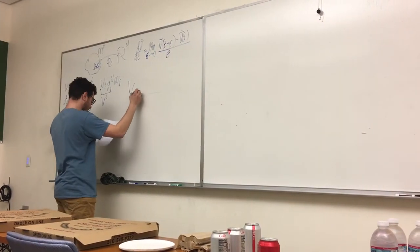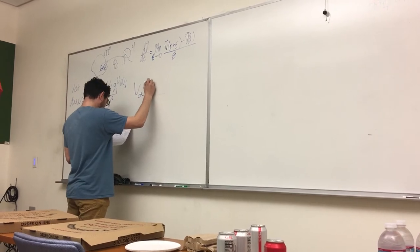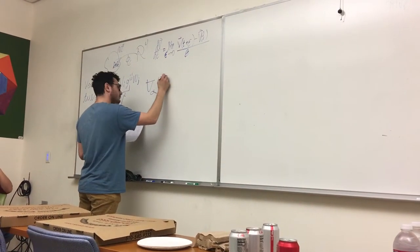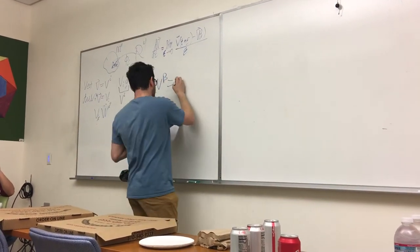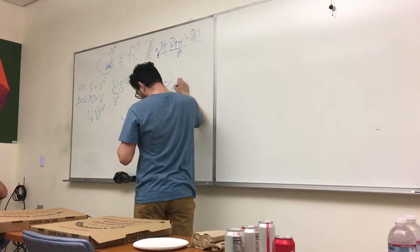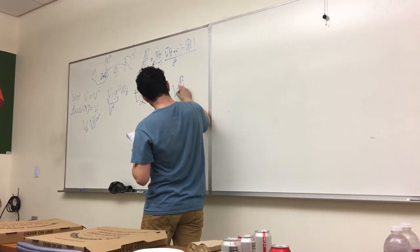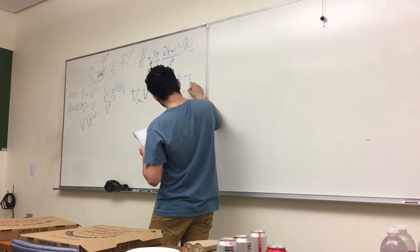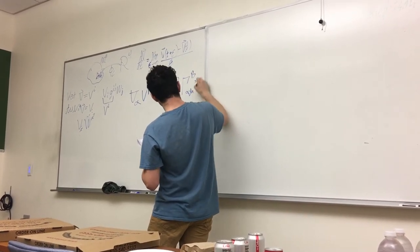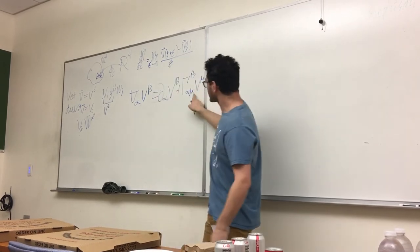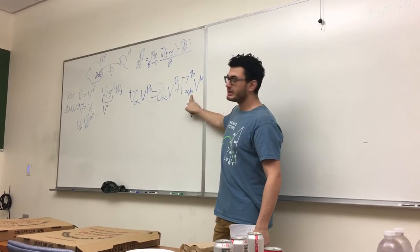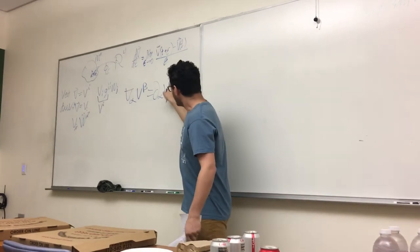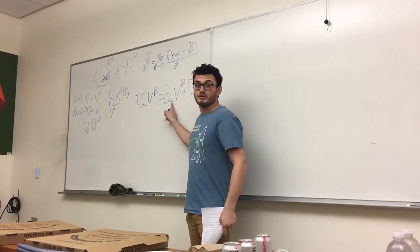∇_α V^β = ∂_α V^β + Γ^β_{αμ} V^μ. Notice the contraction of the vector with this, and notice how these do not contract.